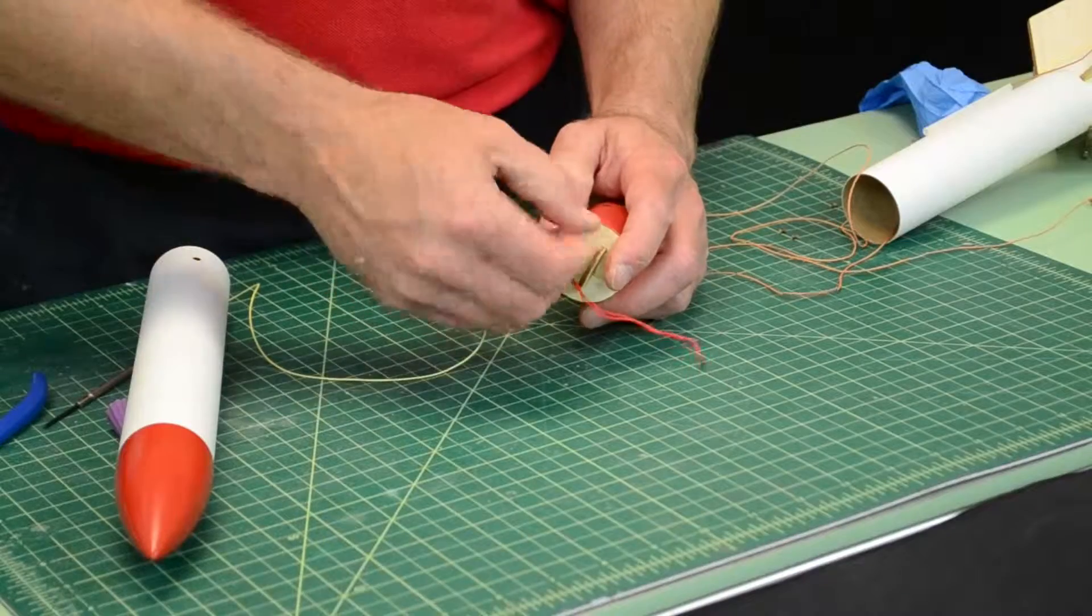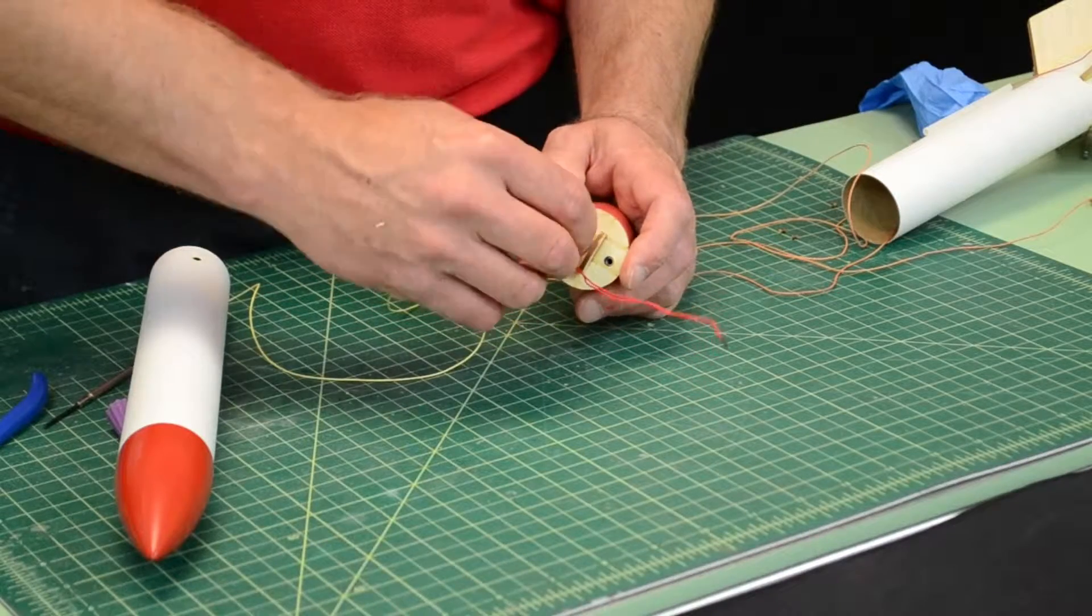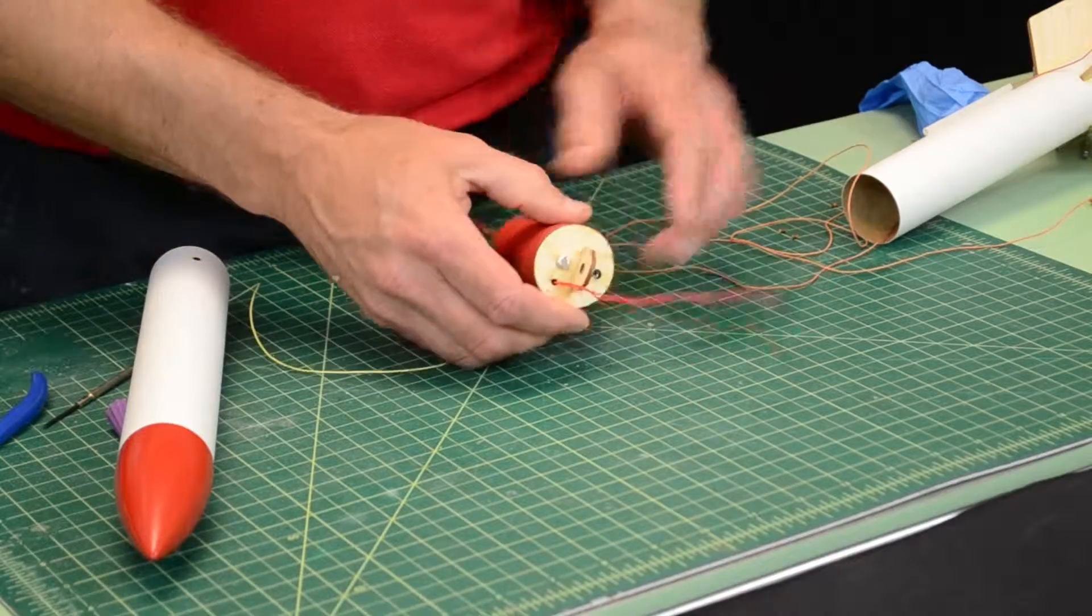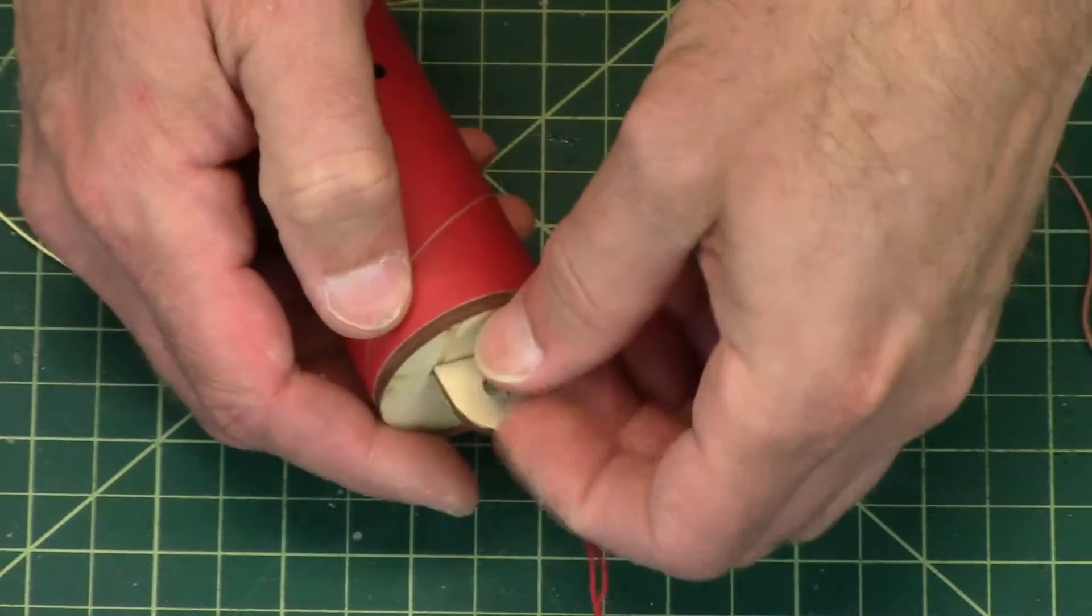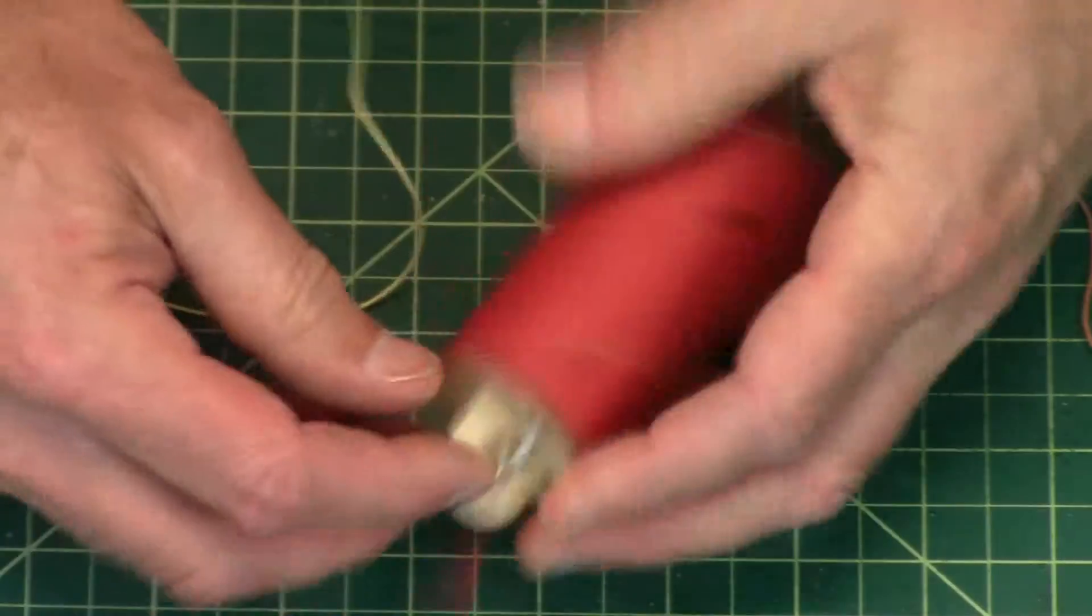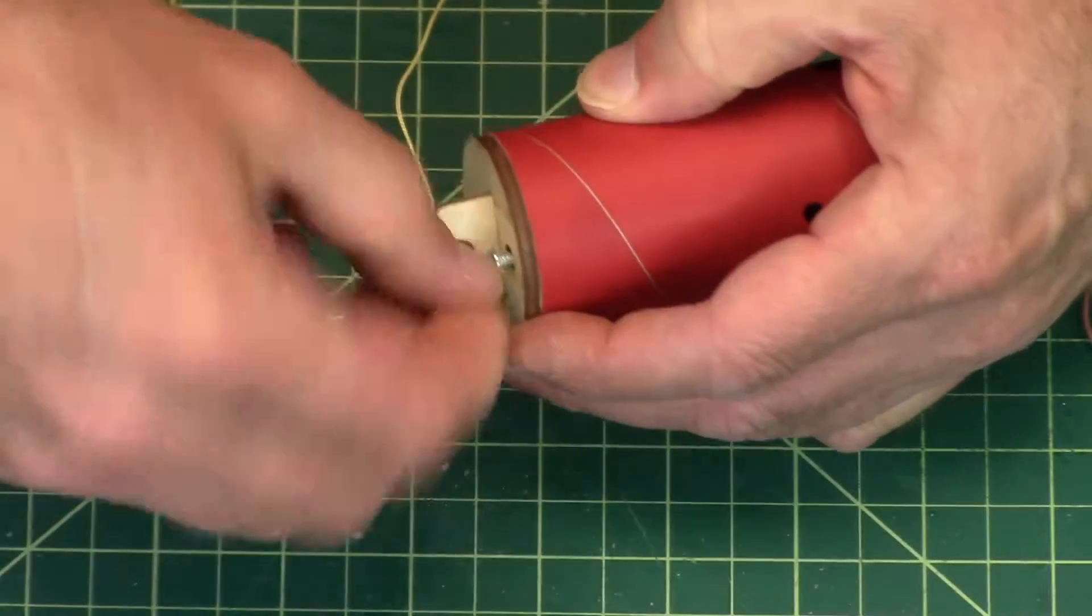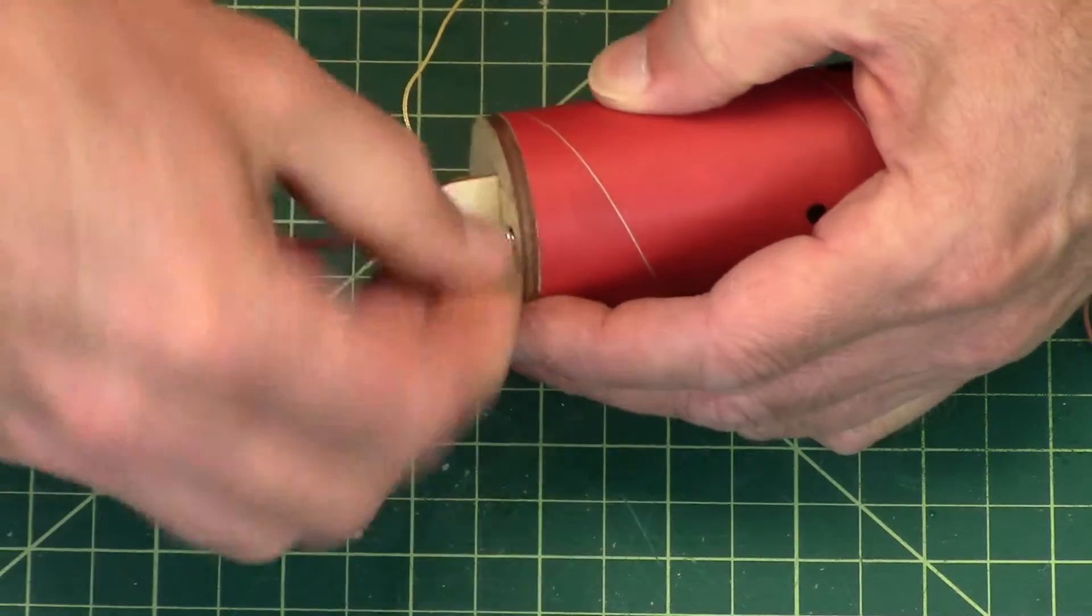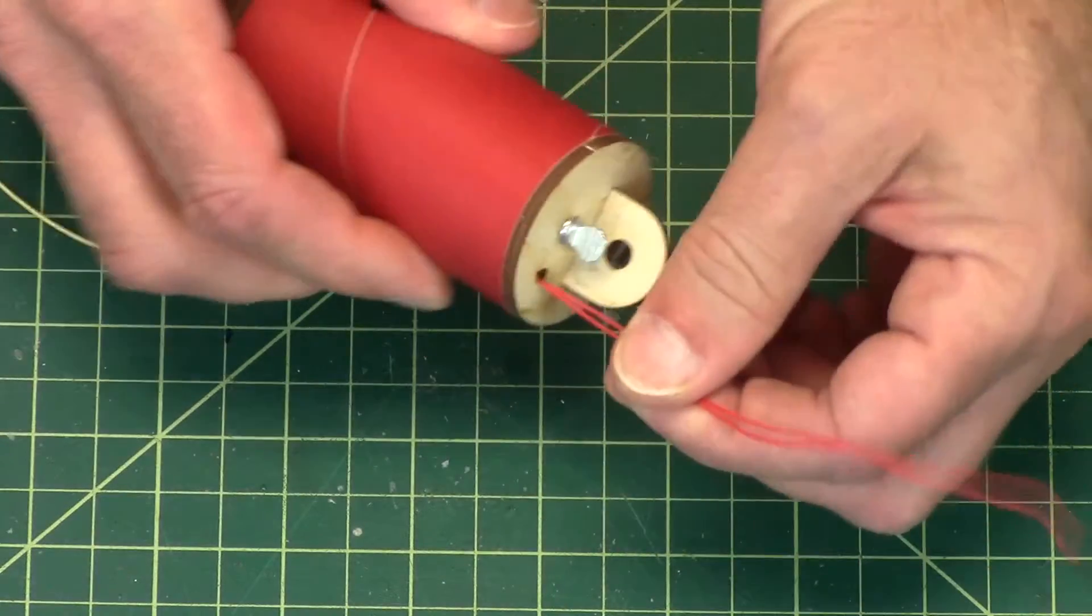And these are going to go into the weld nuts on the inside. And this is what locks everything together, and there's two of them, one on the top and one on the bottom. Just like that.